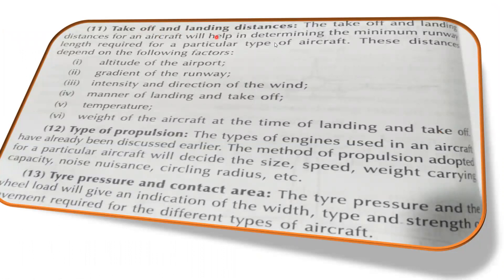The next characteristic is takeoff and landing distances. These distances help in determining the minimum runway length required for a particular type of aircraft. The distances depend on the following factors: altitude of the airport, gradient of the runway, intensity and direction of wind, manner of landing and takeoff, temperature, and the weight of the aircraft at the time of landing and takeoff.